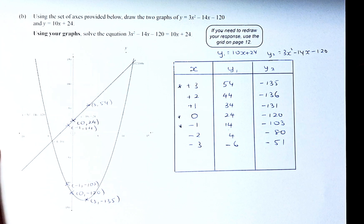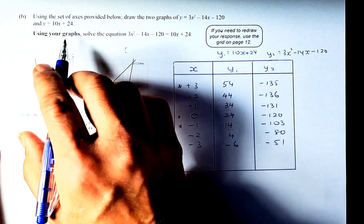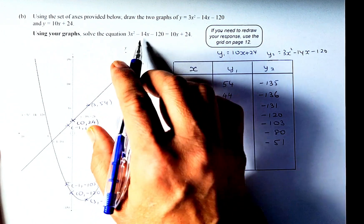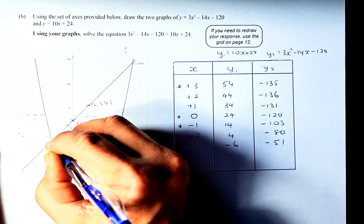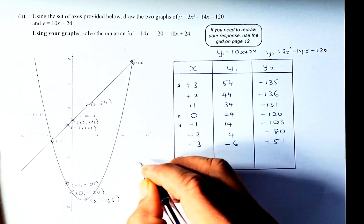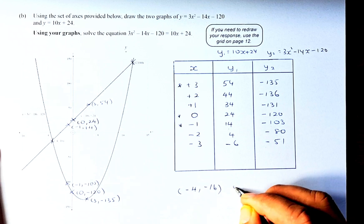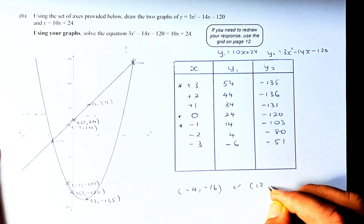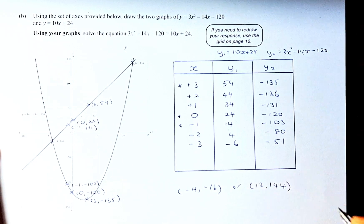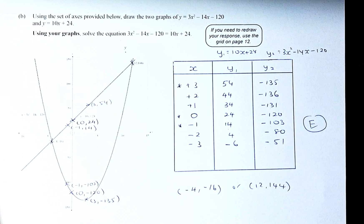The points of intersection appear here and here. The answer is (-4, -16) and (12, 144). Getting both intersection points correctly gives you an excellent grade. As I said, if you have a graphic calculator, it's much easier.